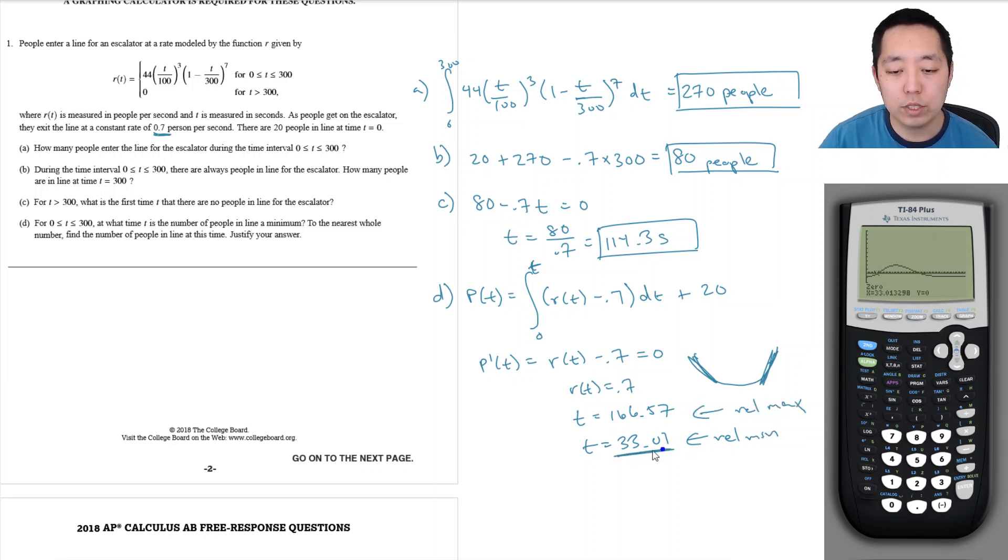t equals 33.01 is the location I want to look at, but for the absolute minimum you have to check all the relative mins and the end points. So I need to create a table and calculate the amount of people at times 0, at the minimum 33.01, and at 300.